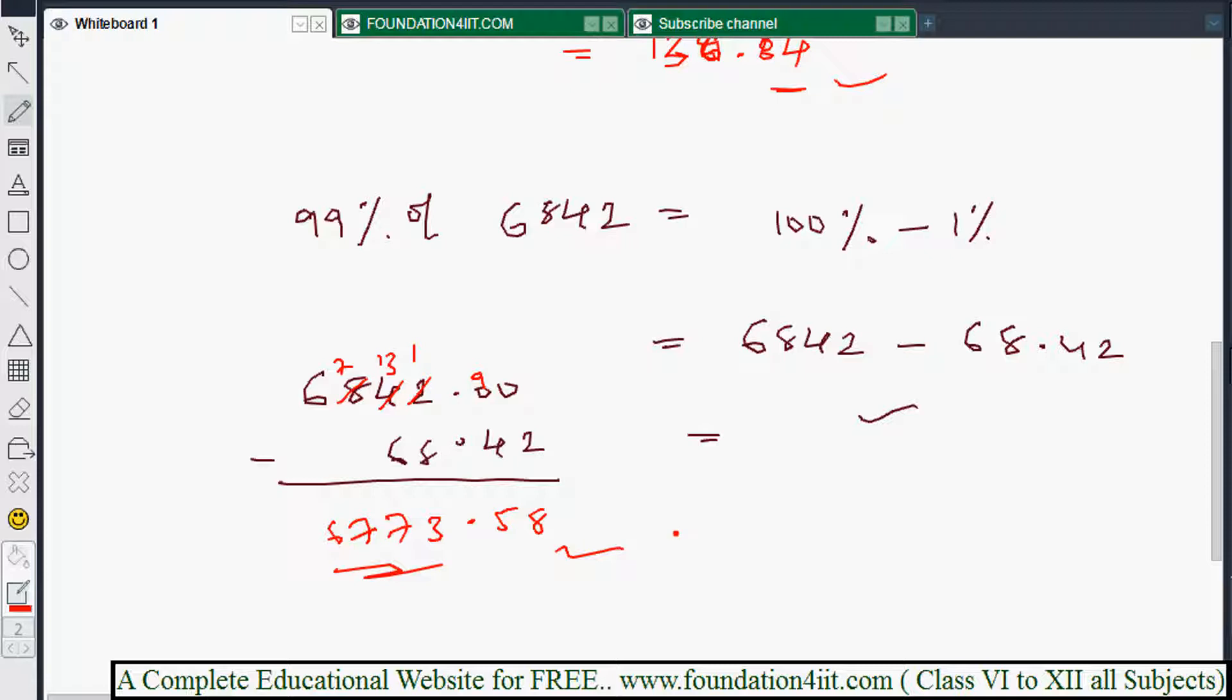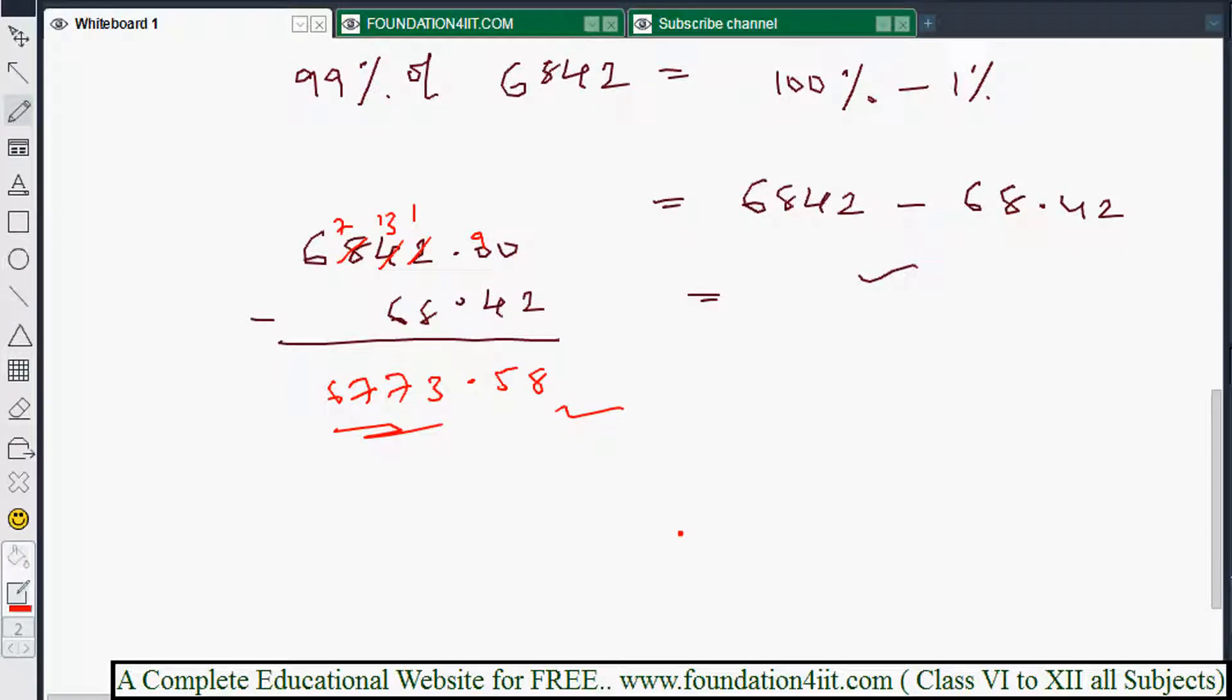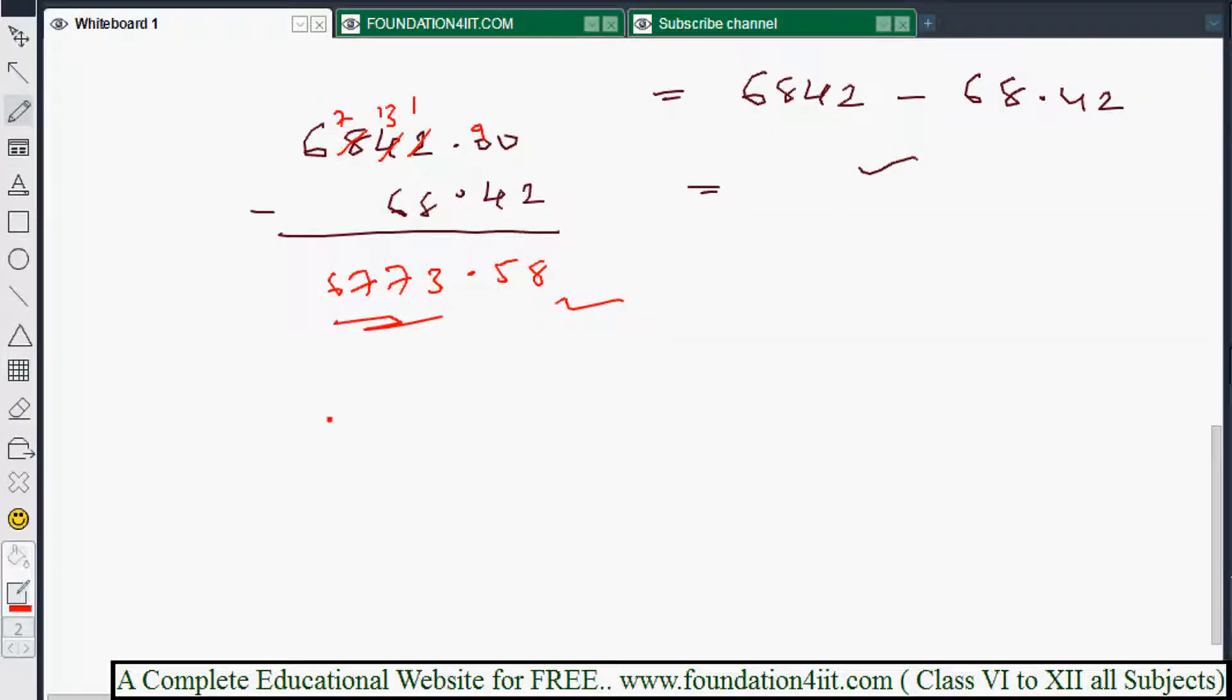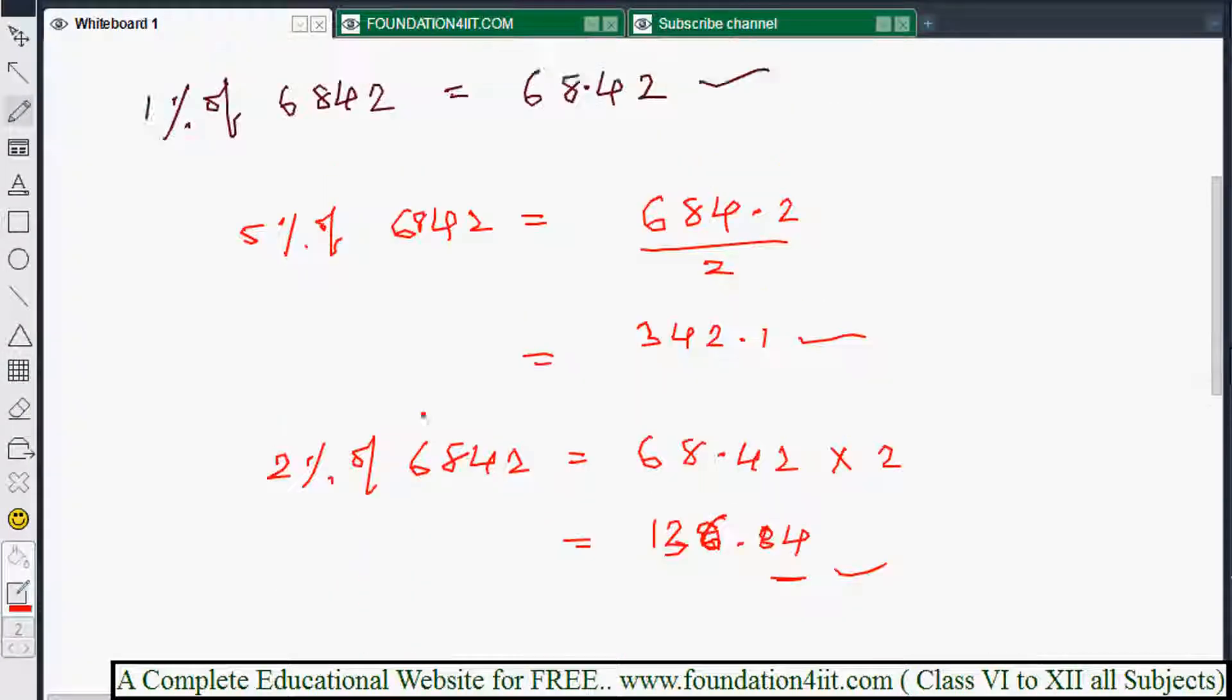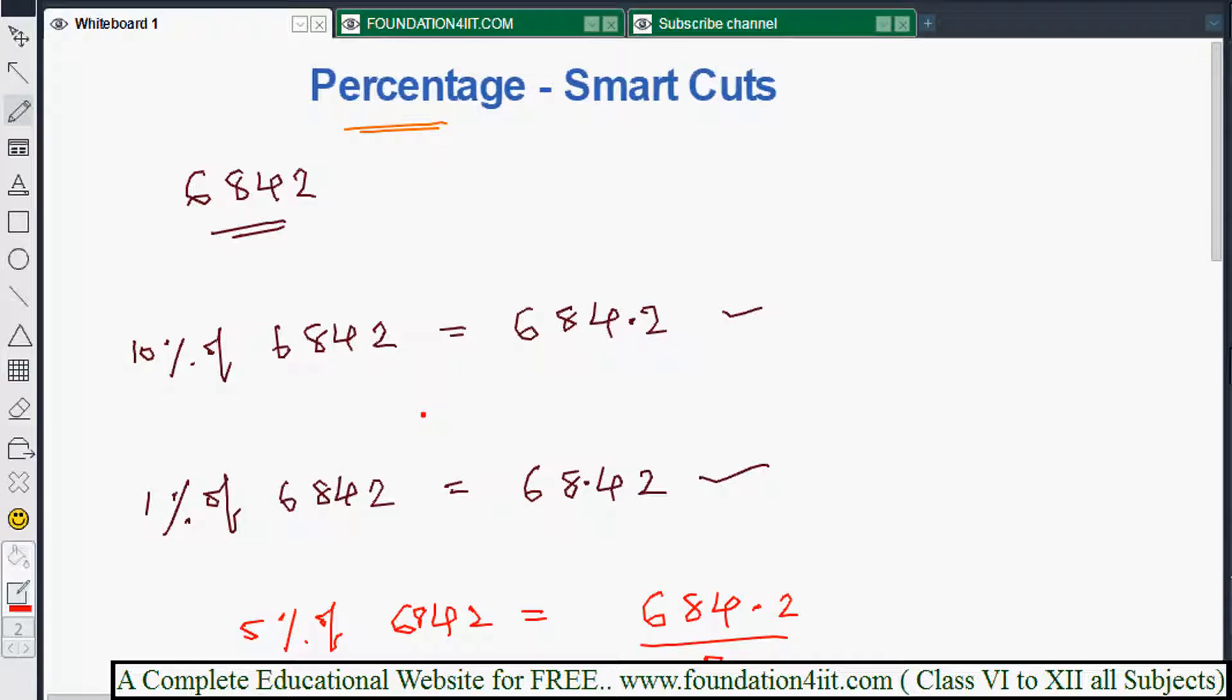Like this, you can use this technique for even 101%, 102%. 101 percent means hundred percent plus one percent. These smart cuts: when there are more questions like nearby percentages, just by seeing the question only we can find the answer. These are the smart cuts we'll use for percentages when you get like ten percent, one percent, ninety-nine, 102, 105.